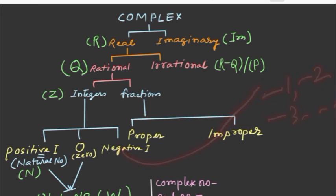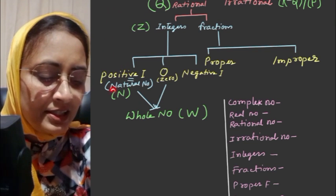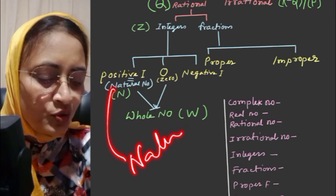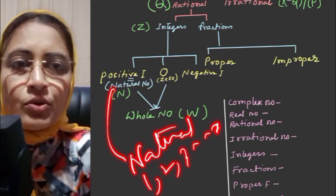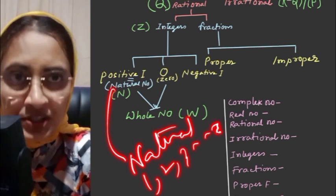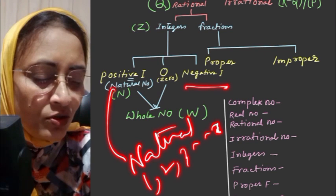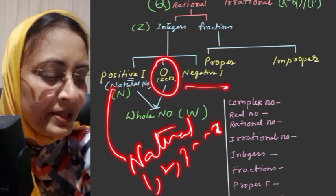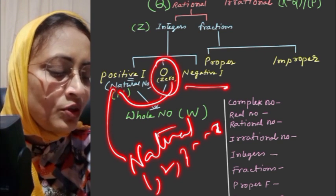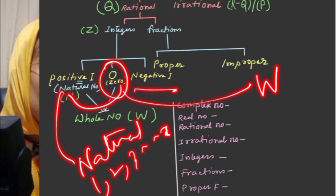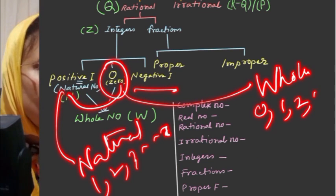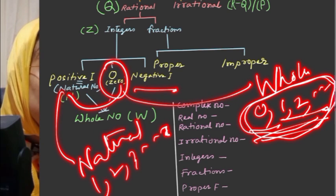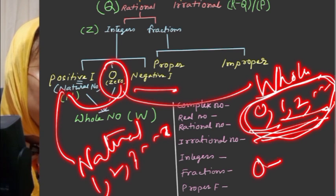The positive integers are what we call natural numbers. Natural numbers are 1, 2, 3, and so on. Natural numbers are positive integers. Whole numbers are 0, 1, 2, 3 — that is, the natural numbers plus zero.